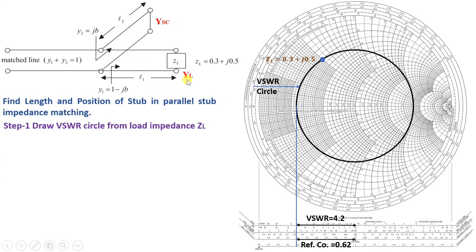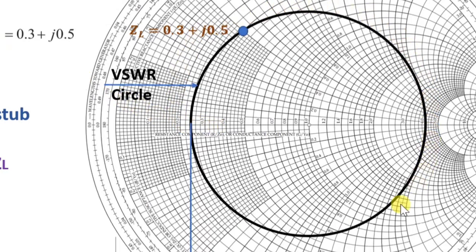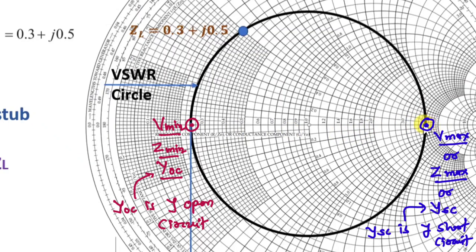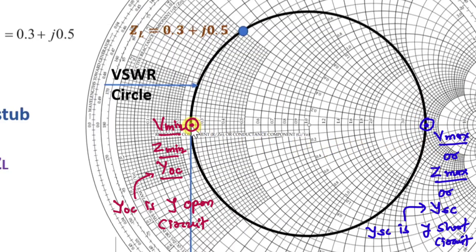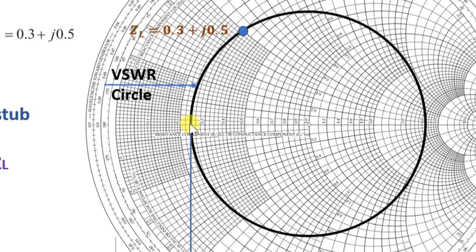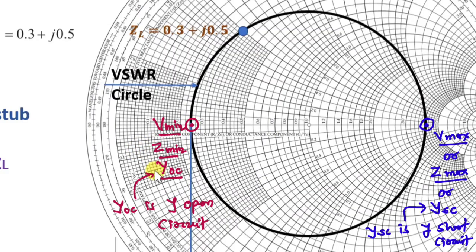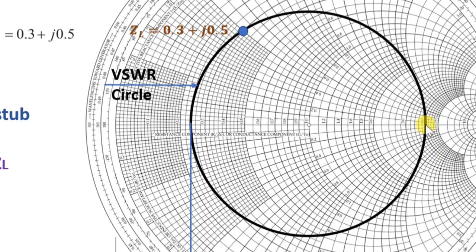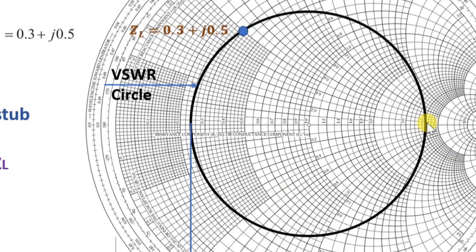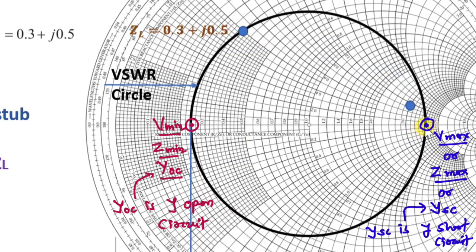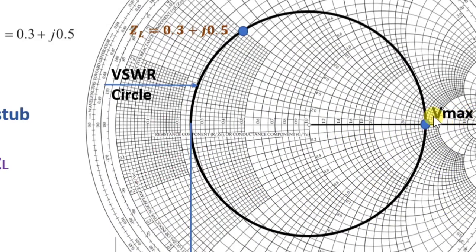We need to identify YL, Y1, YSC, and Y2. YSC is the short-circuit admittance. On the Smith chart, Vmin occurs at Zmin and Vmax occurs at Zmax. At Vmin there is Zmin and open-circuit admittance (Yoc), while at Vmax there is Zmax and YSC — short-circuit admittance. So on the VSWR circle, the point at Vmax is considered YSC.